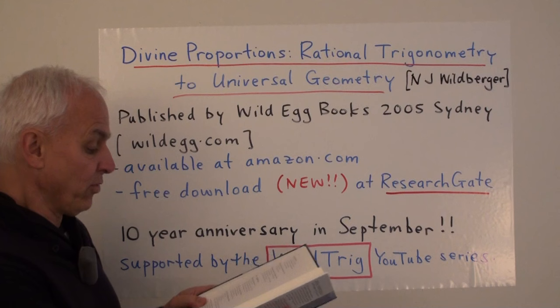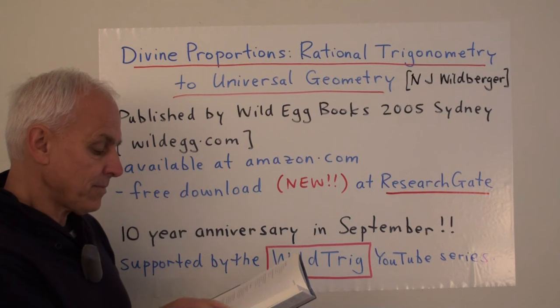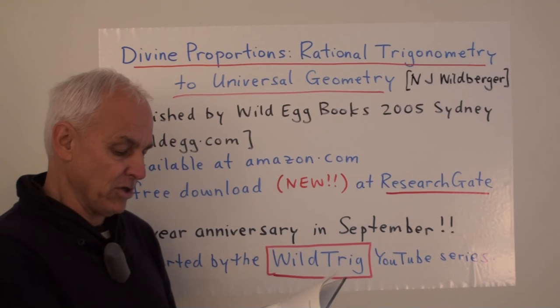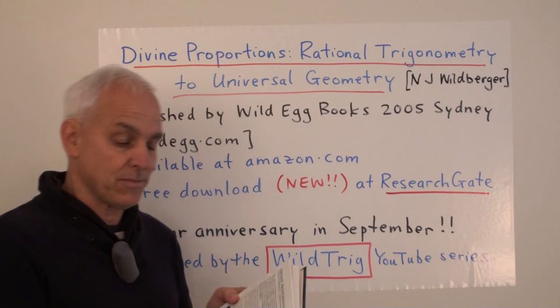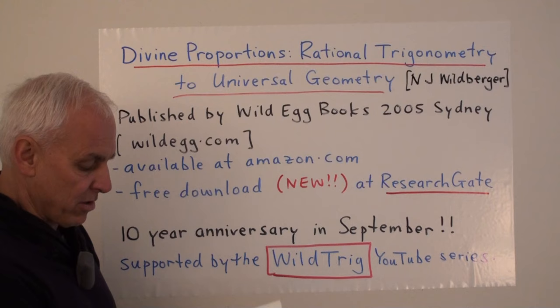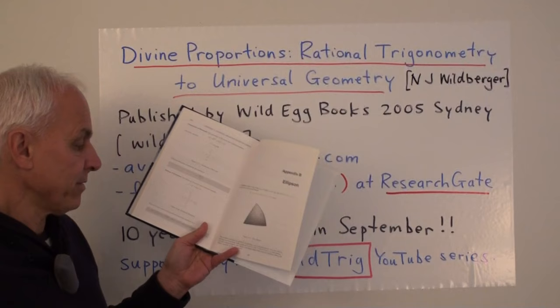The applications section covers the triangle spread rules, two-dimensional and three-dimensional problems, physics applications, surveying, resection and Hansen's problems, Platonic solids, and finally rational spherical coordinates dealing with calculus-type problems in higher dimensions. There are also appendices: one on rational polar equations of curves dealing with classical curves from the point of view of rational coordinates, and one on the ellipson — a remarkable cubic surface that looks roughly like an inflated tetrahedron, intimately connected with the triple spread formula.